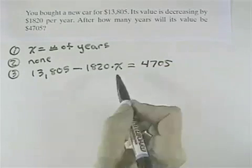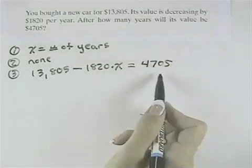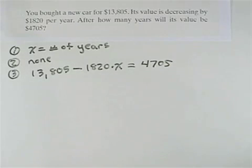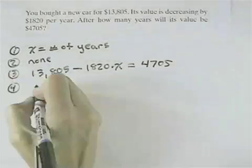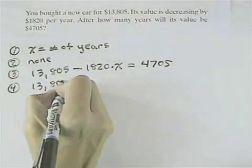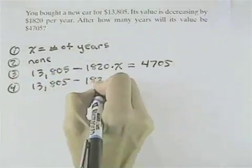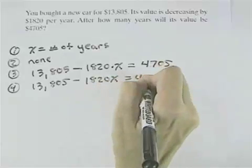So there's our equation. We want to know the X value when the car will have decreased to $4,705. Step four is to solve this. So we'd have $13,805 minus $1,820X equals $4,705.